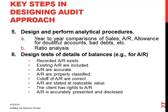As I pointed out last week, substantive tested transactions and tested controls can be performed simultaneously. That's why you saw in the previous problem what we call dual purpose tests. You can perform an audit procedure and gather information not only about the control and the effectiveness of that control, but also gather information about the transactions and the transaction amount.